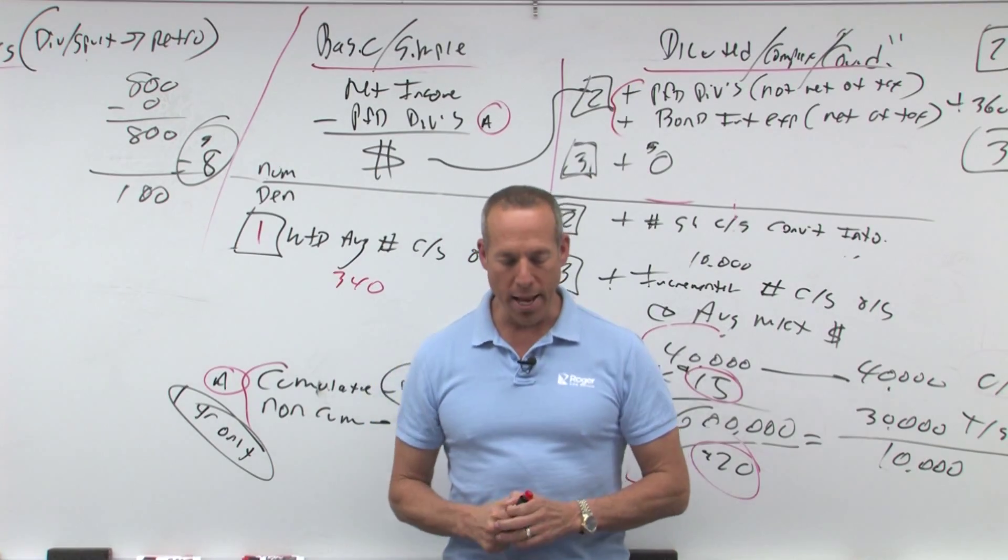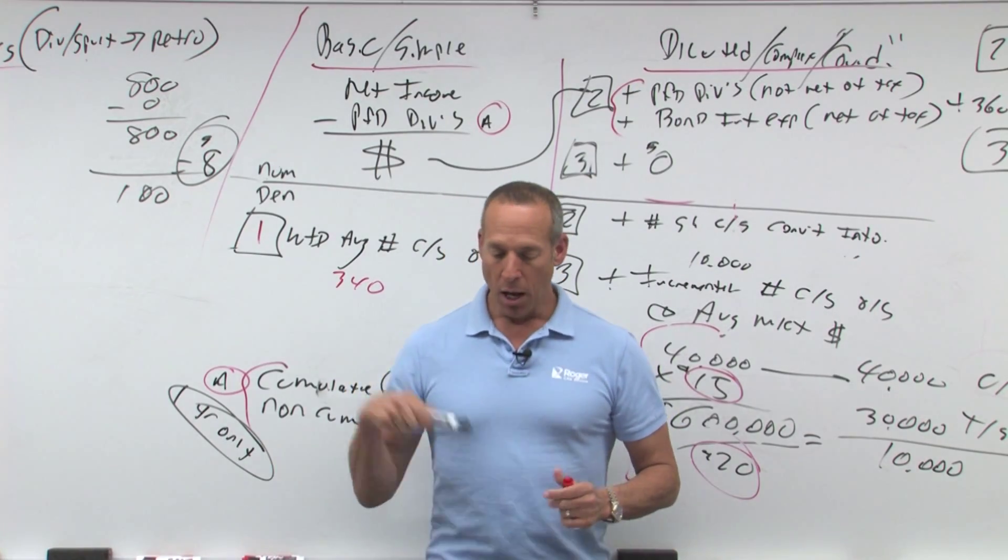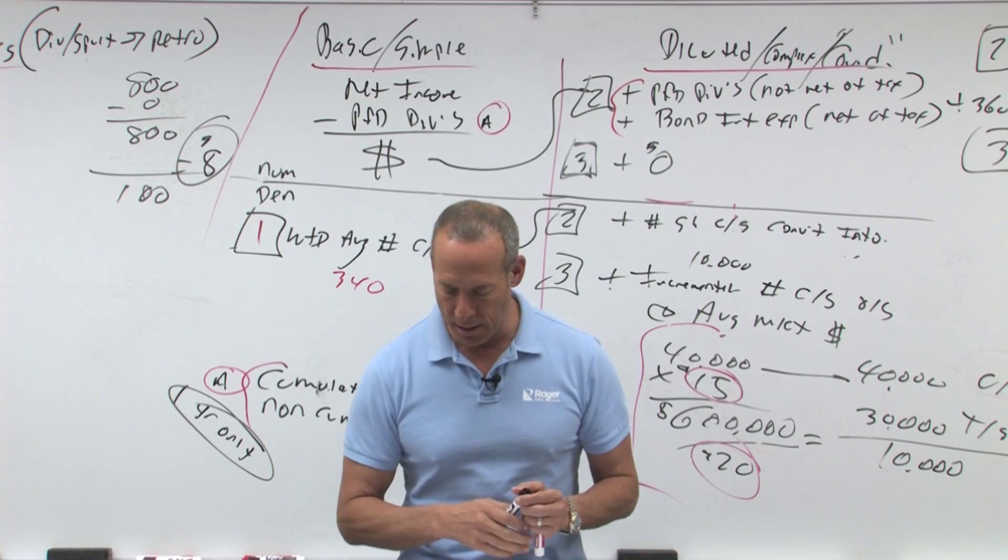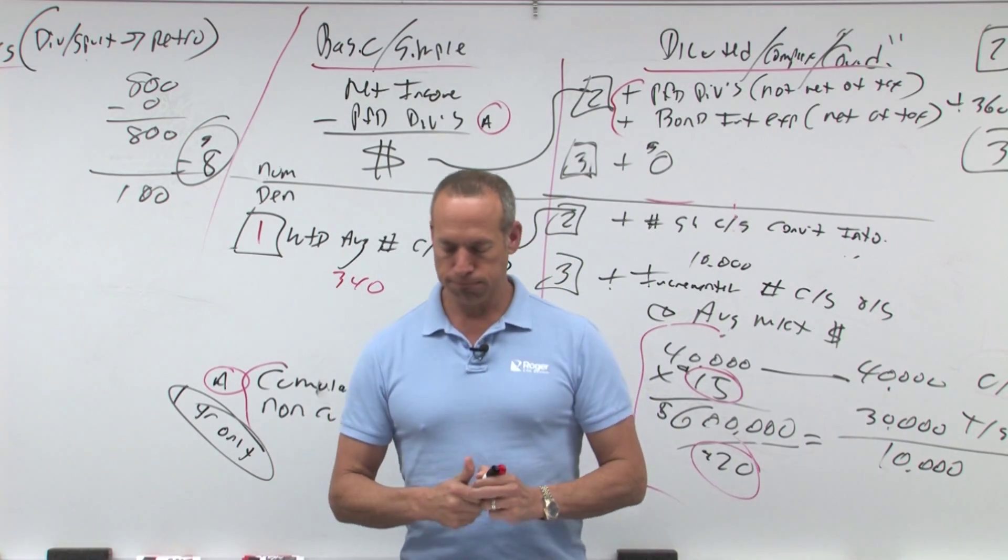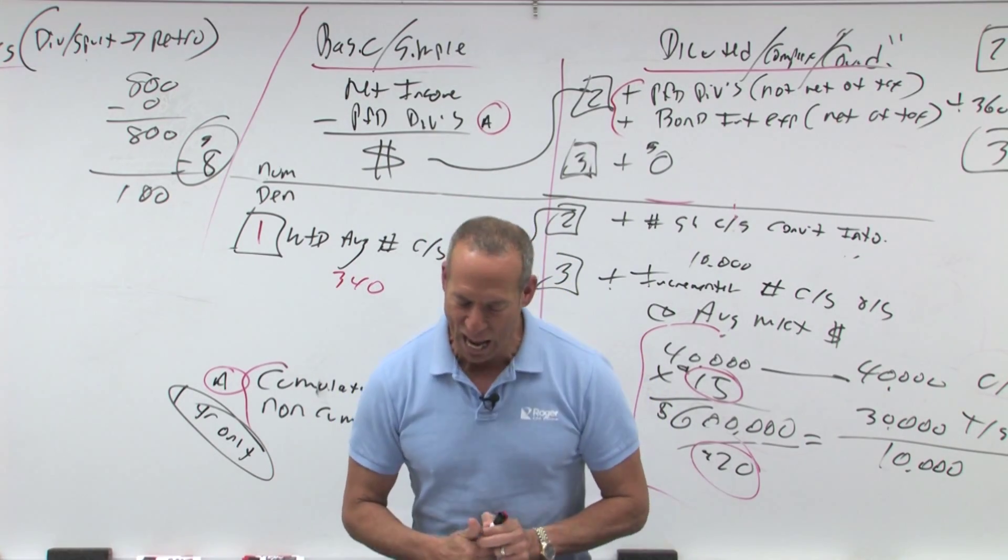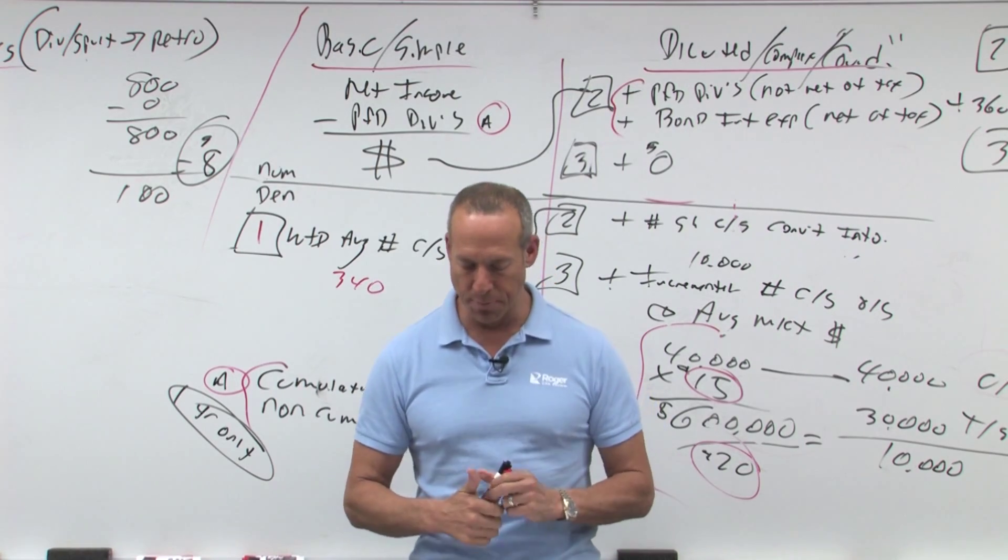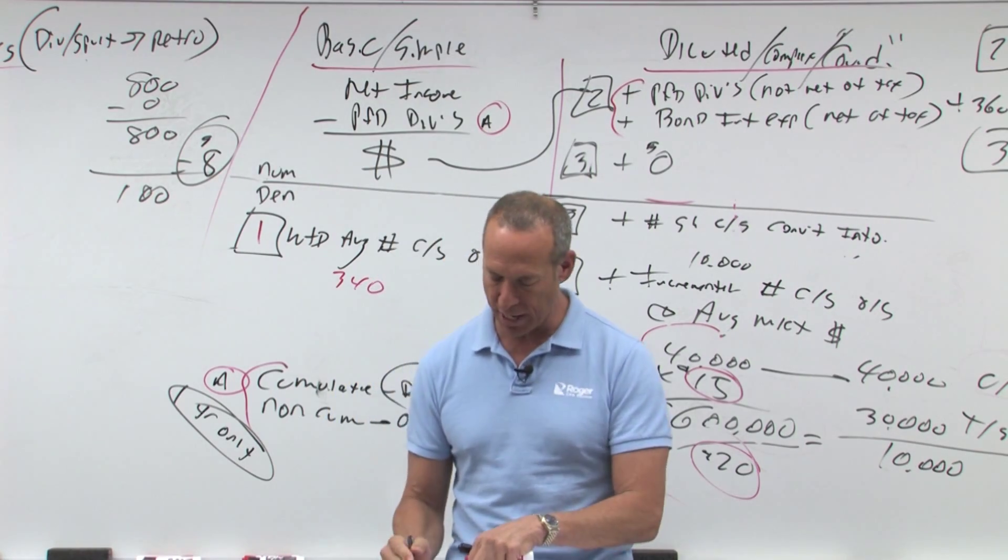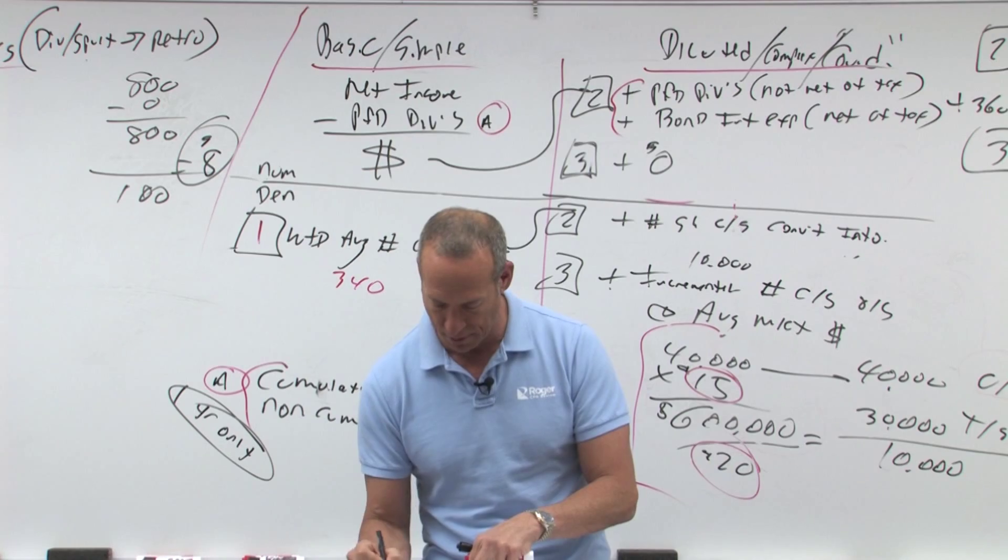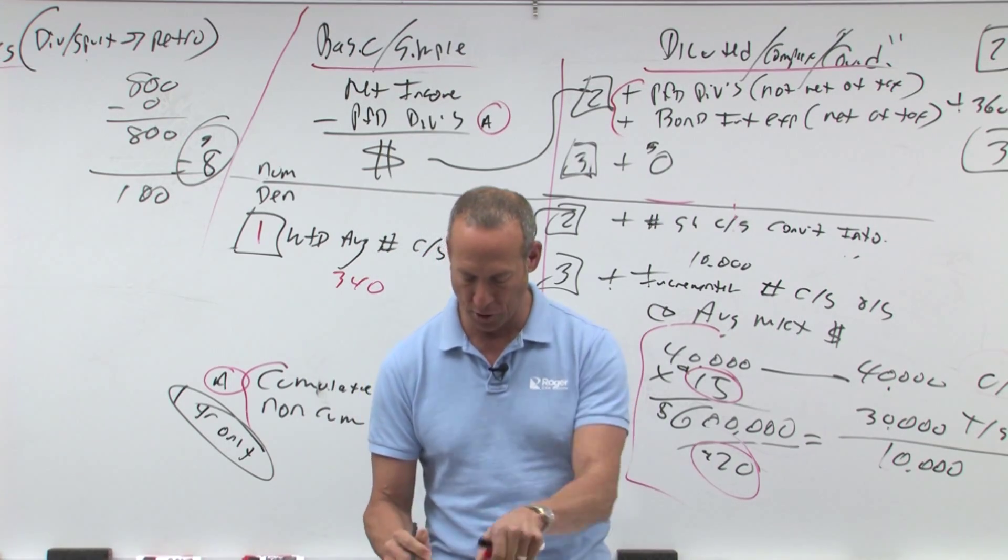All right, let's do some questions in earnings per share. Question number one, last sentence first. What amount should Strachko report as basic earnings per share in its X3 and X2 comparative income statements? So that's basic earnings per share.